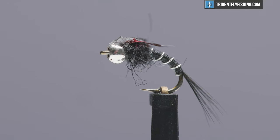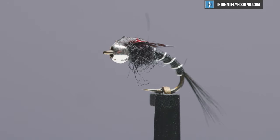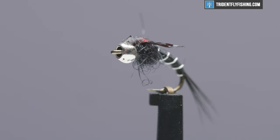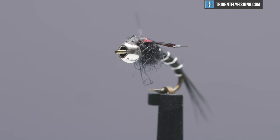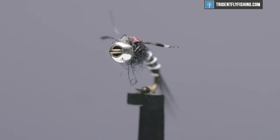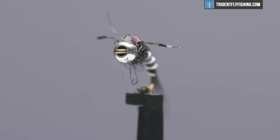Hey guys, Jared with Trident Fly Fishing, and today we're going to tie a cool little attractor. We're going to tie Higa's SOS. Originally started out as a baetis pattern, but now more of a general purpose mayfly attractor. Tied on a curved shank hook, great little emerger pattern. We're going to get started on it right now.